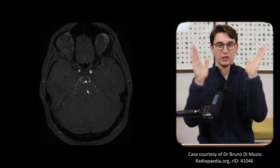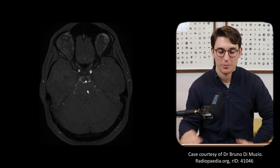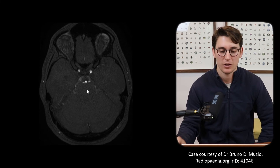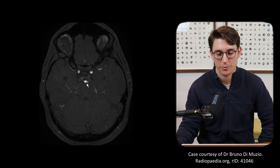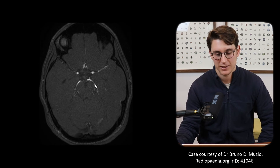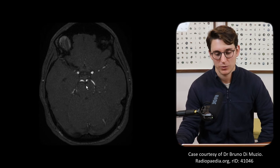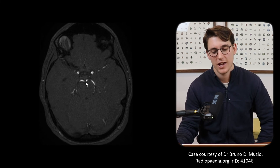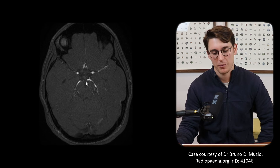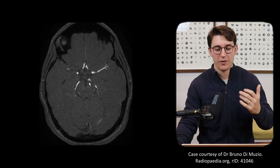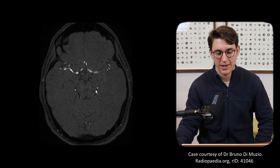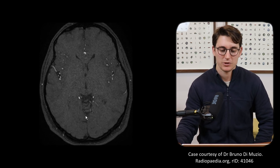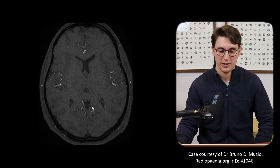Heading up further, we see the basilar bifurcate into our posterior cerebral arteries - we can see that bifurcation here, with the interpeduncular cistern visible. They wrap around the midbrain and head towards the occipital lobe at the back.